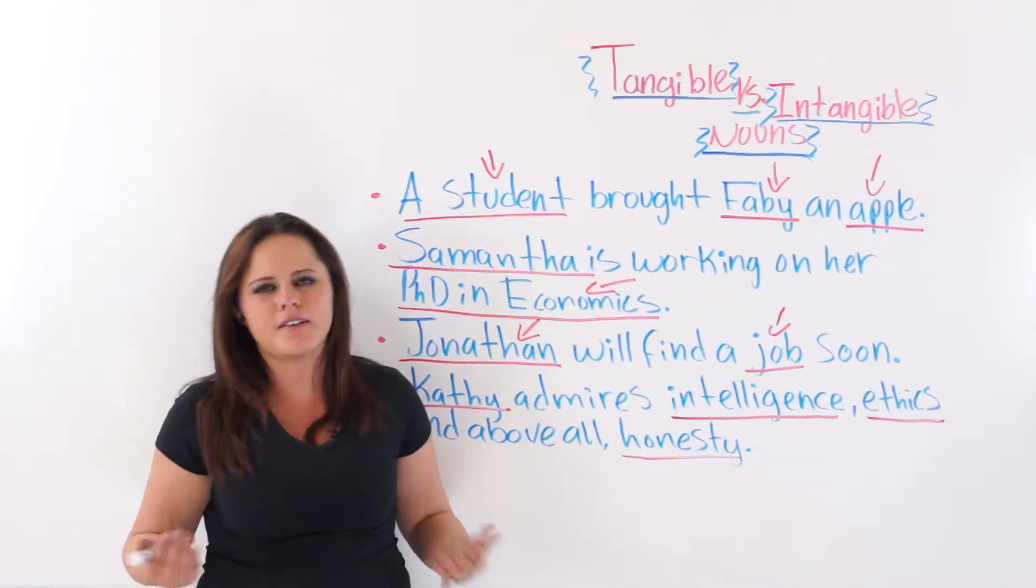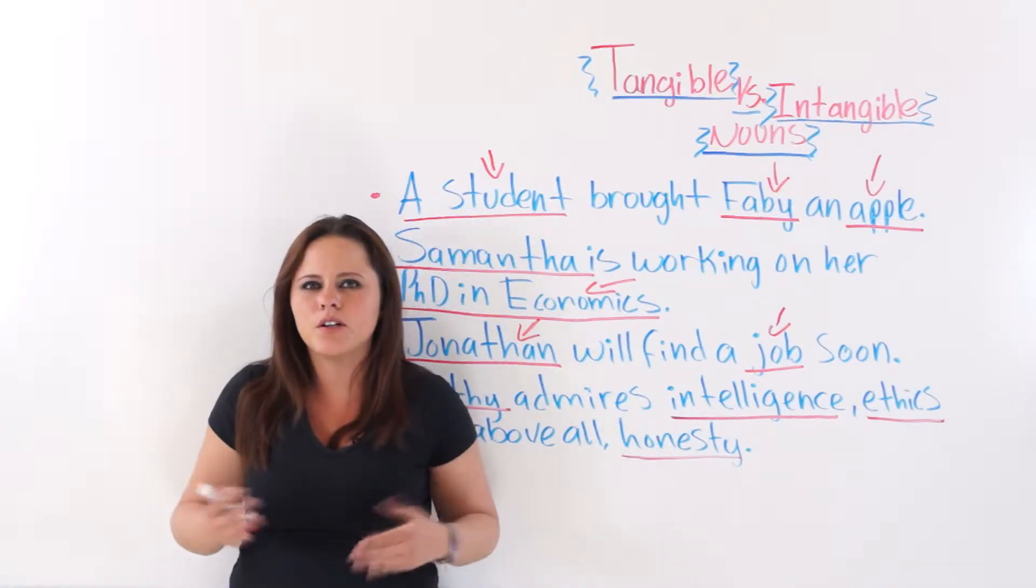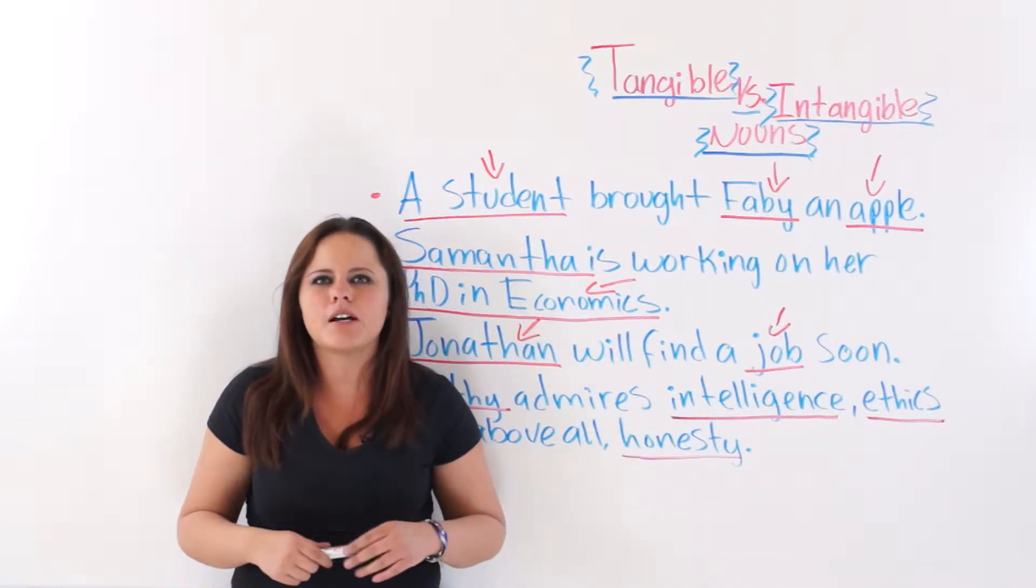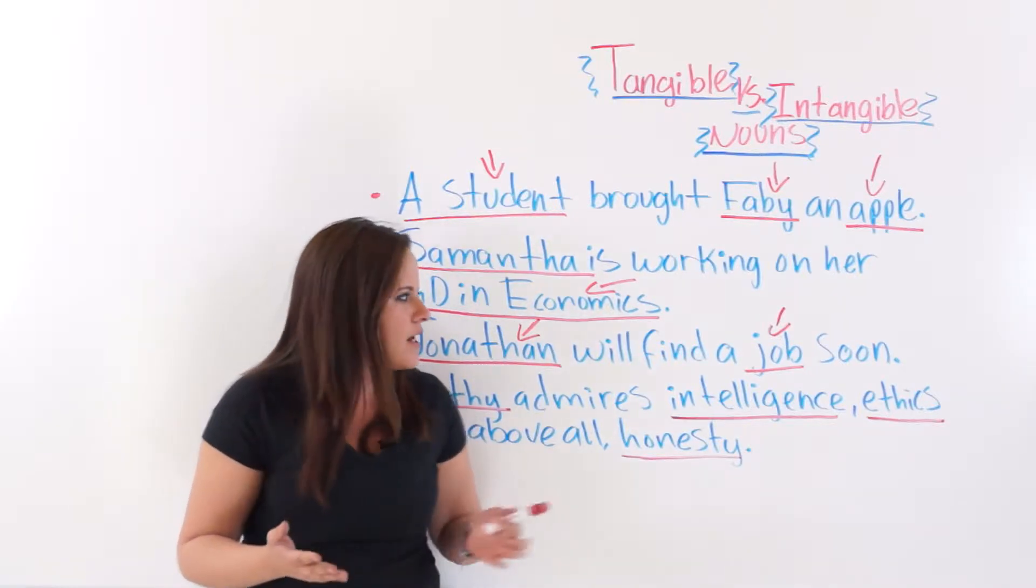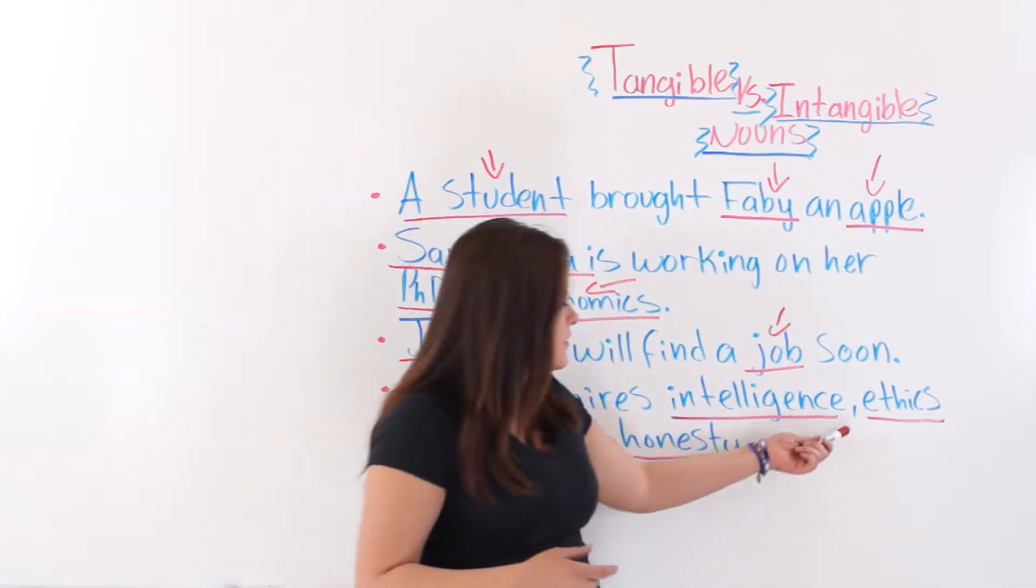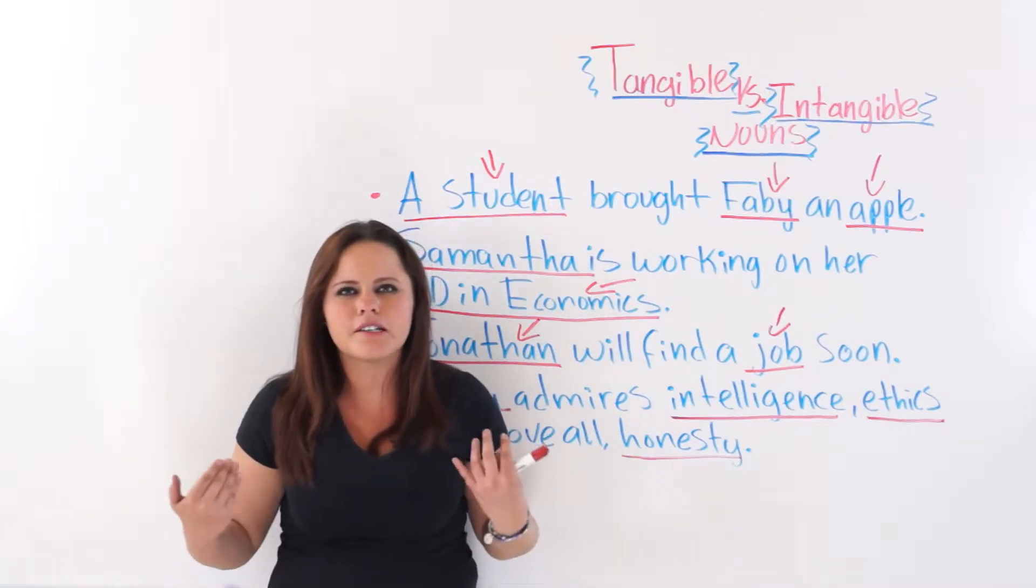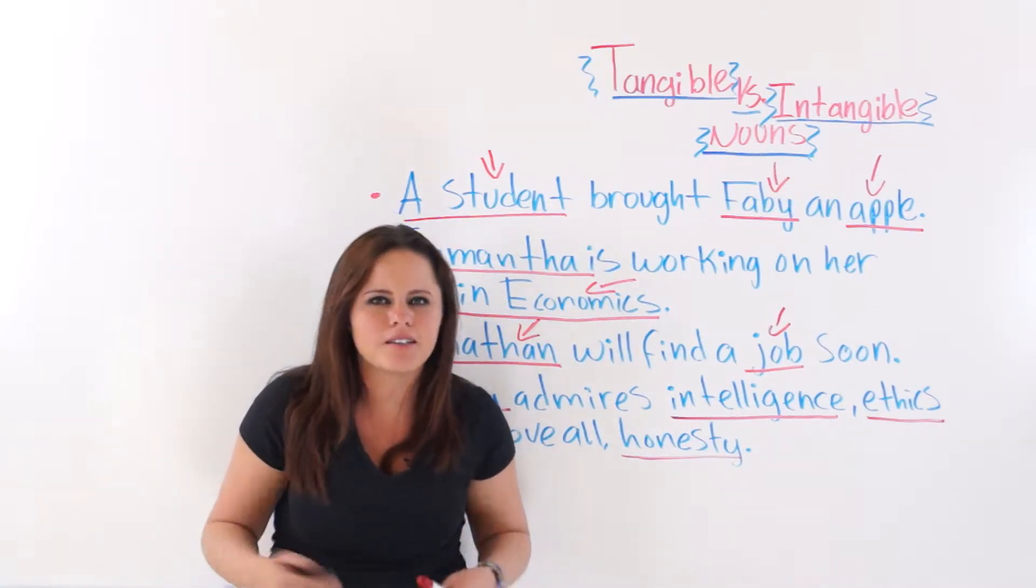And remember that things also include intangible things. This means that they cannot be perceived by the senses. For example, intelligence, ethics, honesty—they are things, but they are intangible. They are ideas or thoughts. PhD in economics is also an intangible noun.